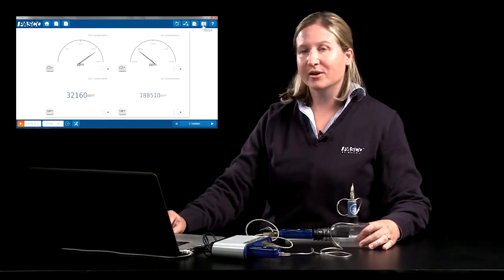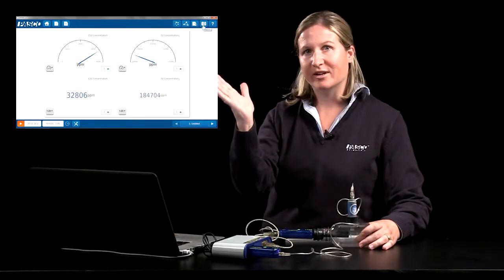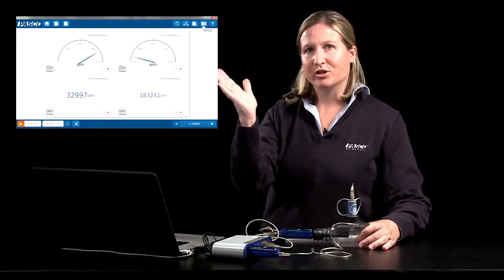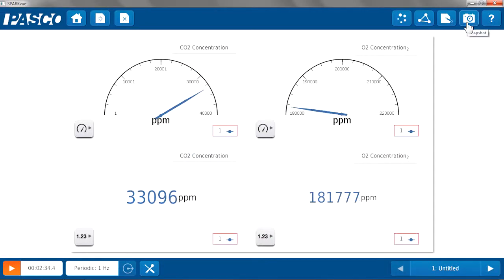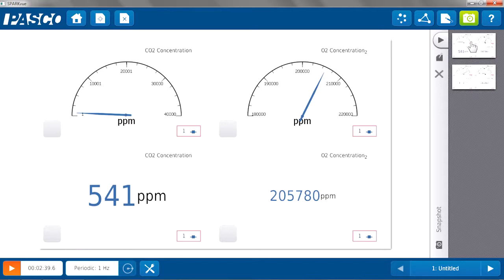Students will probably notice that the carbon dioxide meter showed an increase in carbon dioxide, and the oxygen showed a decrease in oxygen. Taking a snapshot, we can compare those initial and final values.